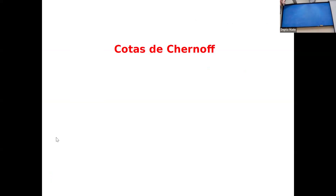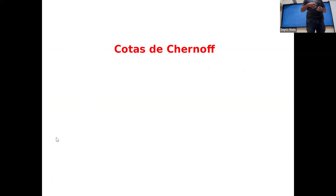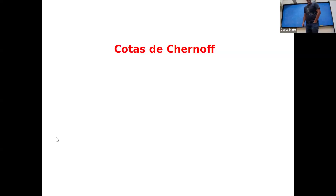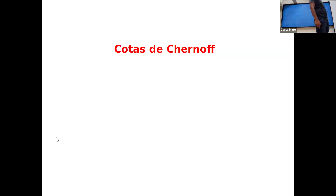Hoy vamos a ver... La clase pasada vimos las desigualdades de Markov y de Chebyshev, que servían para acotar la probabilidad de que una variable aleatoria se alejara de la media. Hoy vamos a ver unas cotas que son mucho más fuertes: las desigualdades de Chernoff, que hacen uso de la función generadora de momentos de la variable aleatoria.